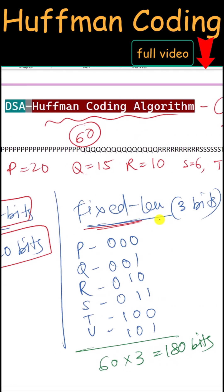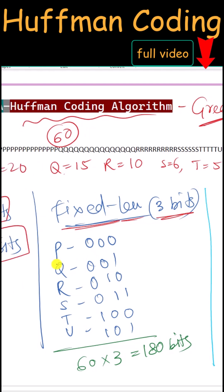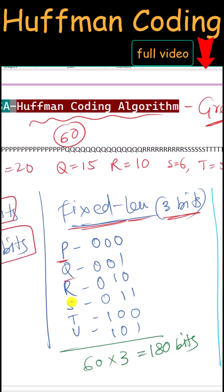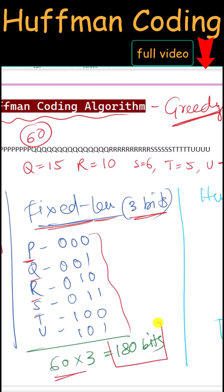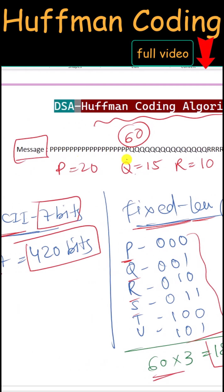Now if we use the fixed length 3-bit representation, so if we represent P, Q, R, S, T, U using only 3 bits, in that case it will take a total of 180 bits for the same message.